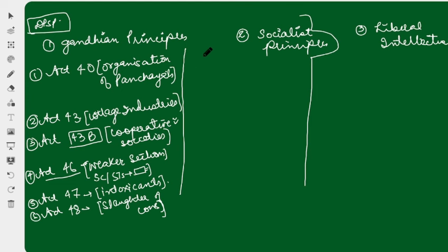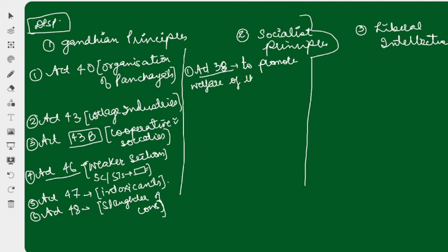Socialist ideology basically says that the state should not have a private property concept — people shouldn't accumulate private wealth; instead, factories and industries should be under state control so that profits can be equally distributed. This is the basic socialist principle. Under socialist principles, Article 38 says to promote welfare of the people and minimize economic inequalities.